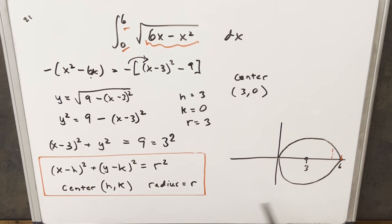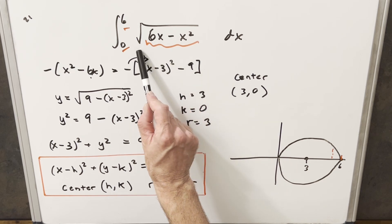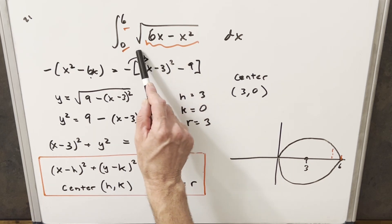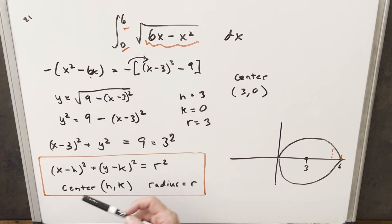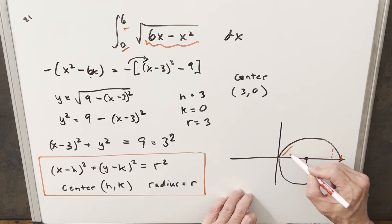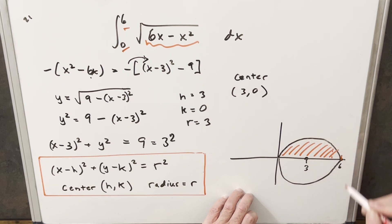And then before we calculate this, one other thing I want to notice. If we go back to our original problem, just notice in our original integral, we have a square root here. So this means that everything here is going to be positive. So our y values are going to be positive. And so that means when we calculate this area, we only want the positive area above the x-axis.